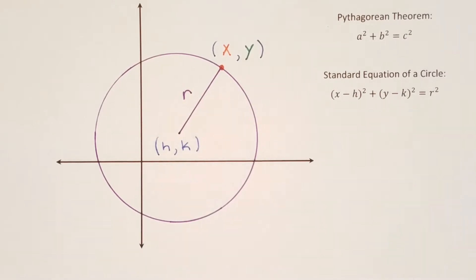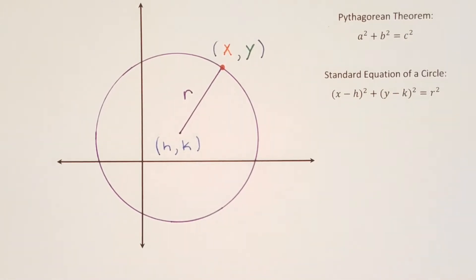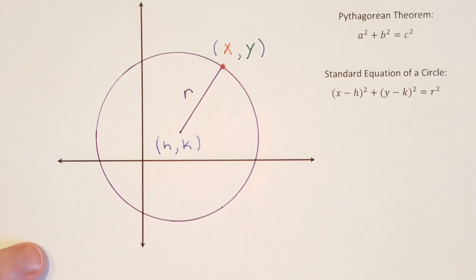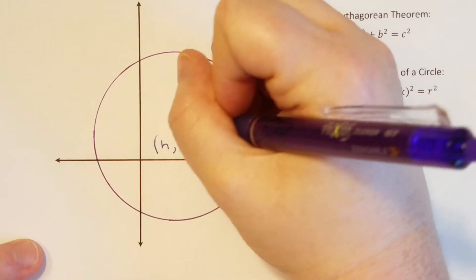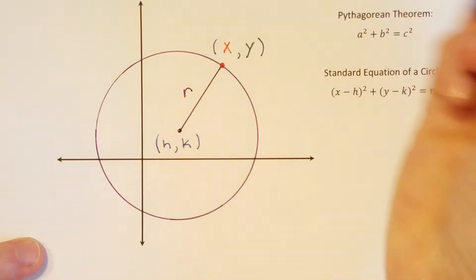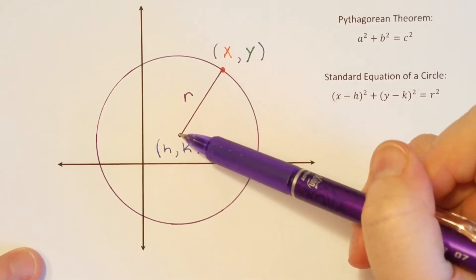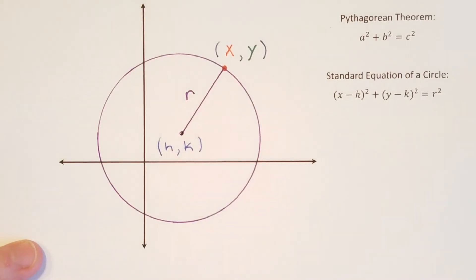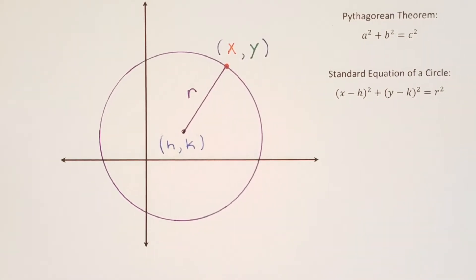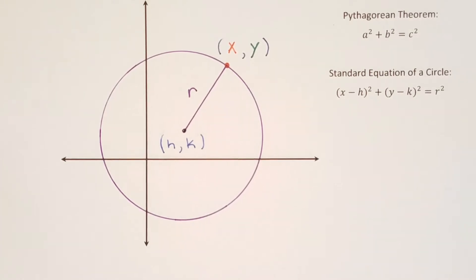So what we're going to do here is construct a right triangle, just like we would if we wanted to find the distance between any two points on the coordinate plane. So in order to find this length r, I'm going to find the distance from h,k to x,y. Keep in mind that h,k is the center of any circle we could draw, and x,y is any point that might be on that circle.